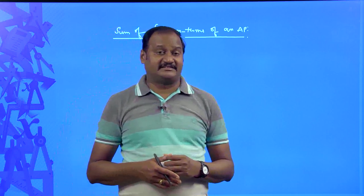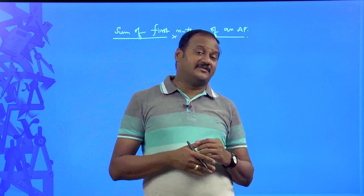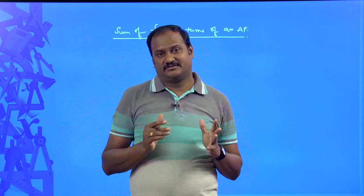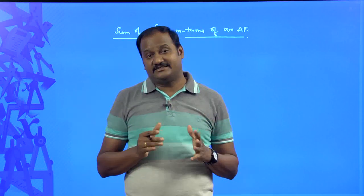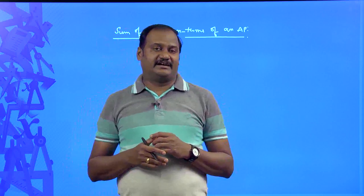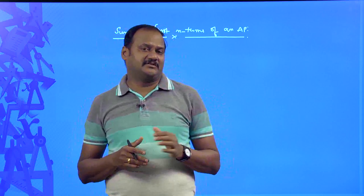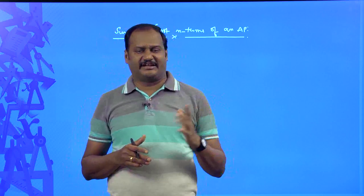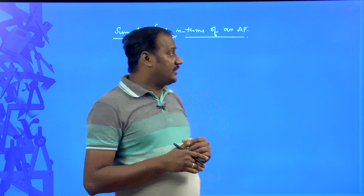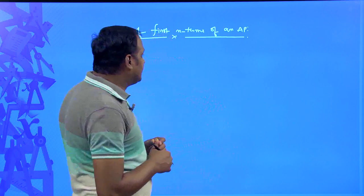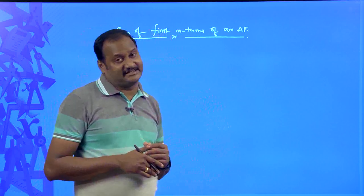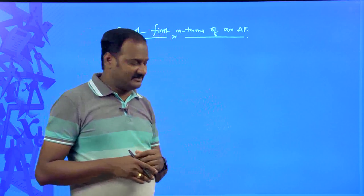What was that interesting character? The name of the character is Carl Frederick Gauss. That small boy answered the given problem within no time. The teacher had asked for the sum of the first 100 natural numbers.